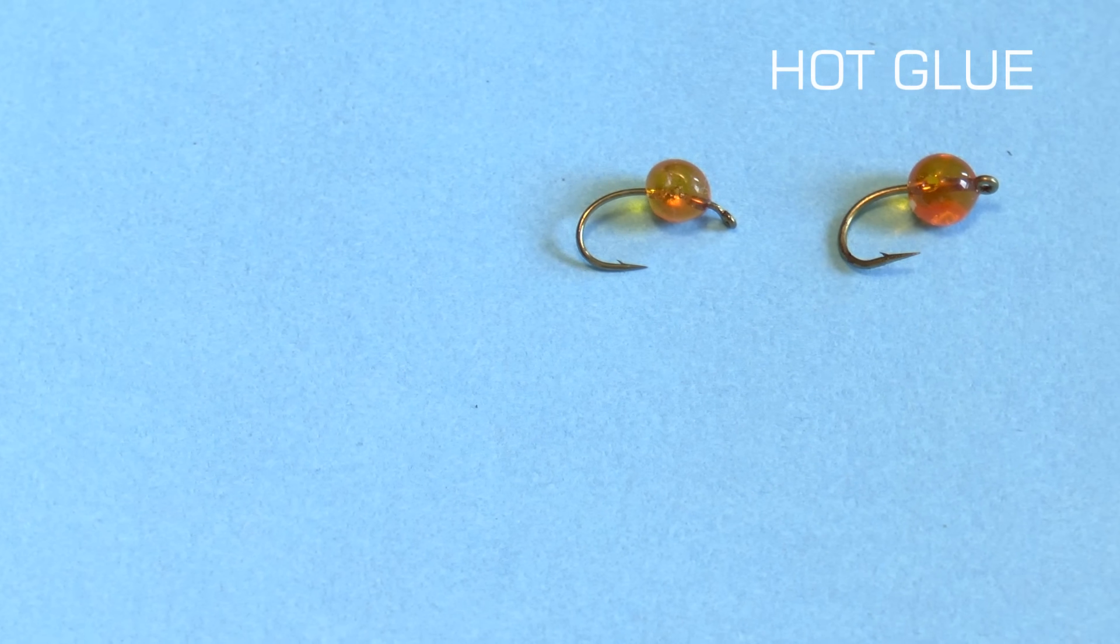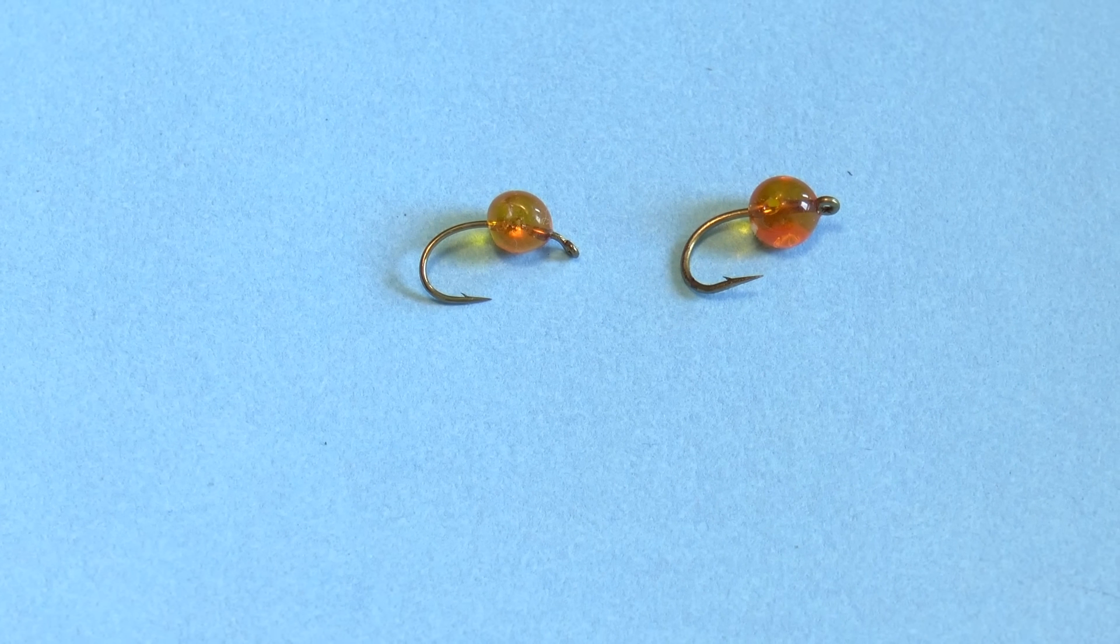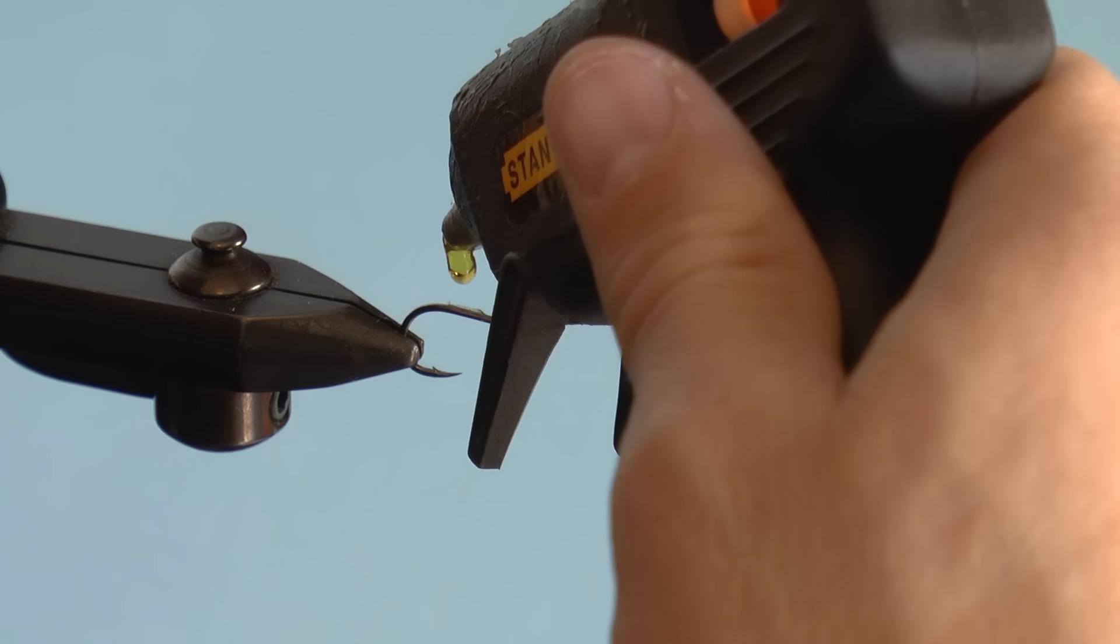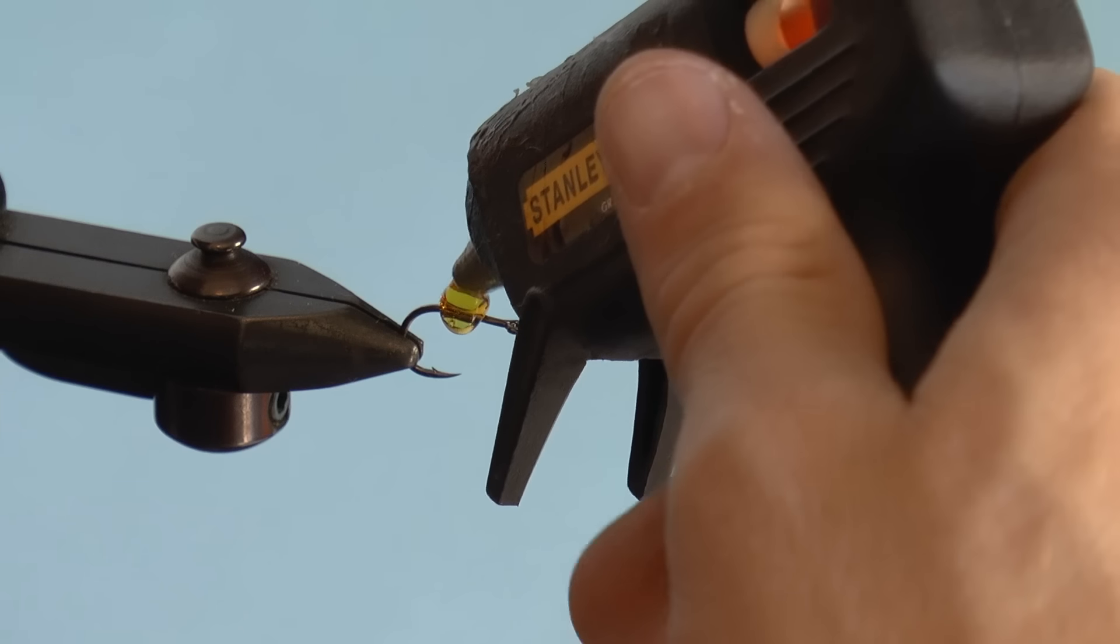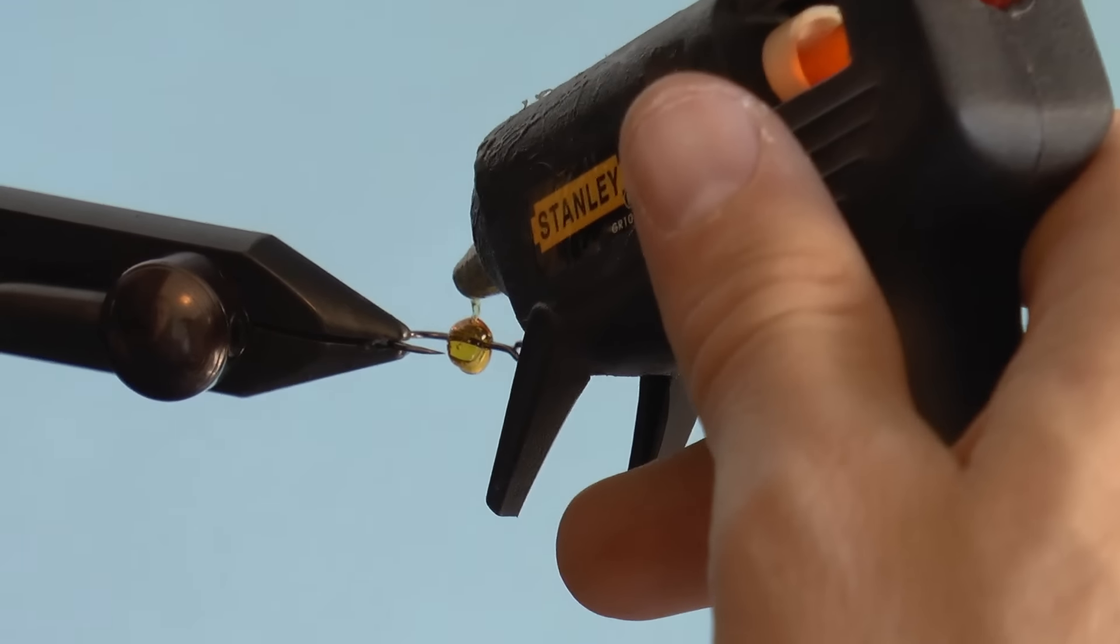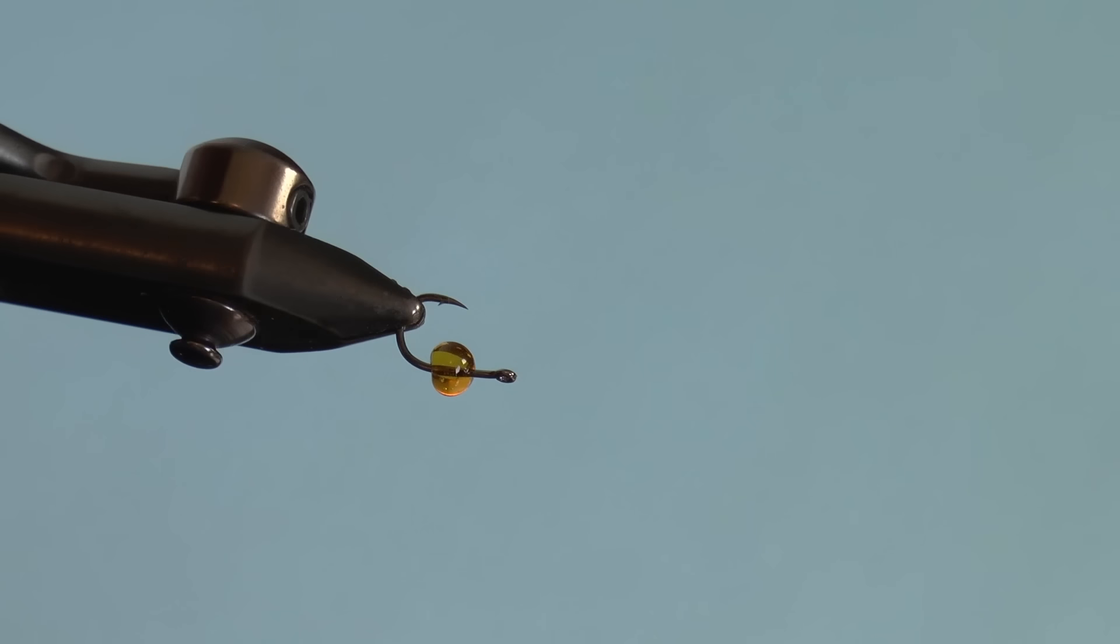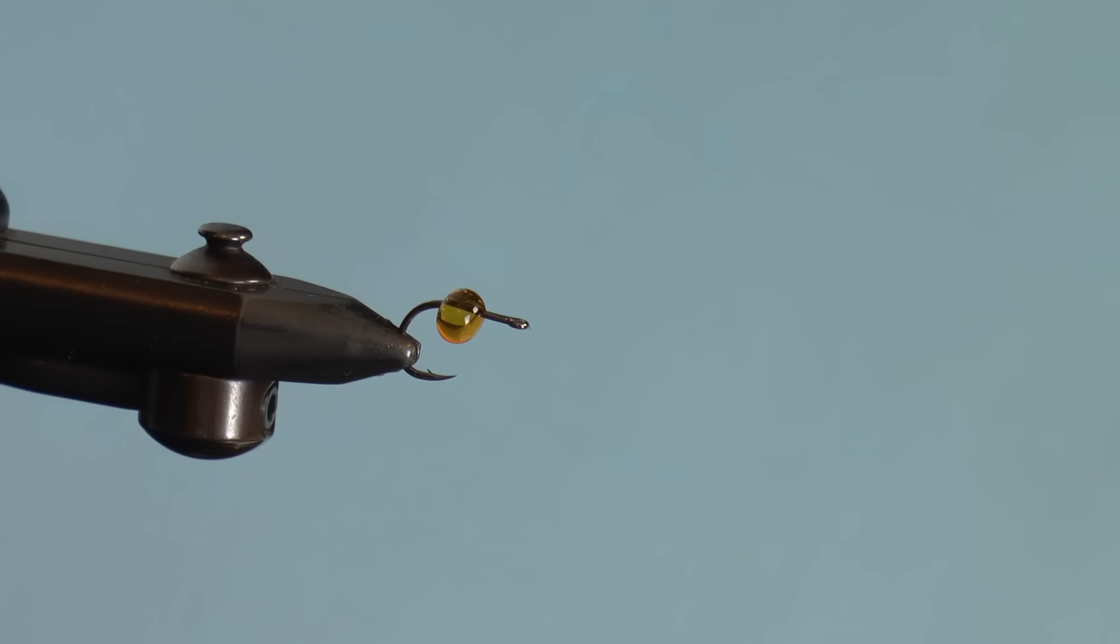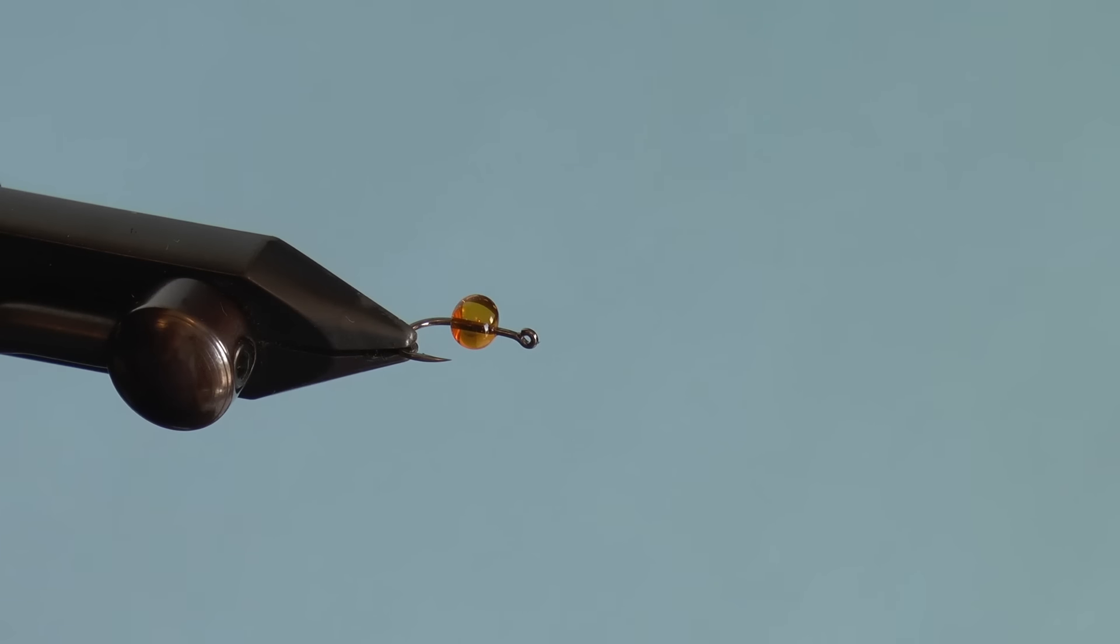Number seven is a hot glue gun egg. Put a drop of hot glue onto the hook. I like to turn the hook a few times to position the glue as far on top of the hook as possible within reason. You can dip it in water if you like, but experiment to see what you like best.